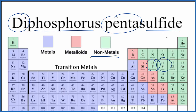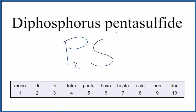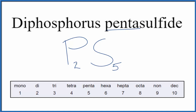Let's do that. For phosphorus, we're going to write P. The prefix 'di' means we have two of them, so we put a two here as the subscript. And then sulfide — that's S for sulfur. And 'penta' means five, so we'll put a five here. The formula for diphosphorus pentasulfide is P2S5.